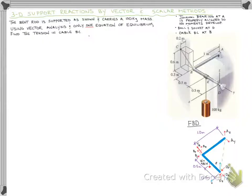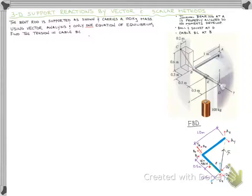Our goal is to write an expression for summing moments about that axis. The only forces that will have moments about axis AD are the tension in cable BC and the applied weight. We'll draw a unit vector lambda to represent our axis, along with position vectors drawn in green — one from the weight back to D, and one from the cable back to D.